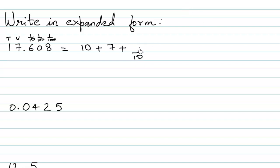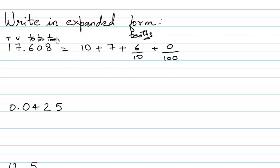So 6 is the face value of that digit, and since it is under the tenths place, we write 6 upon 10. Then 0 is under the hundredths place, so 0 upon 100. Then 8 is written under the thousandths place, so 8 upon 1000. In this way we can write the number 17.608 in the expanded form.